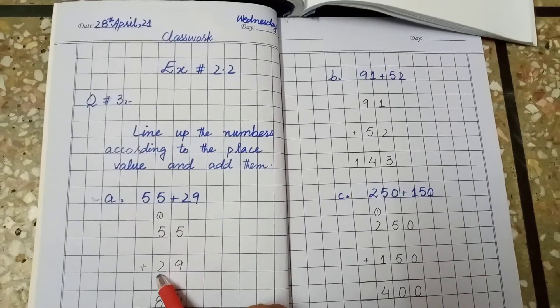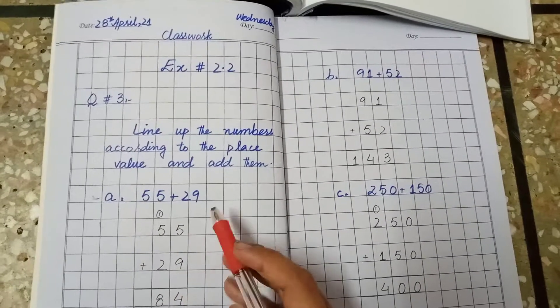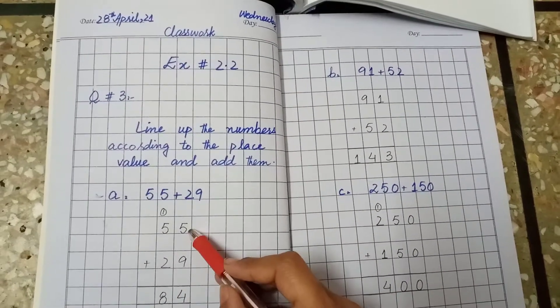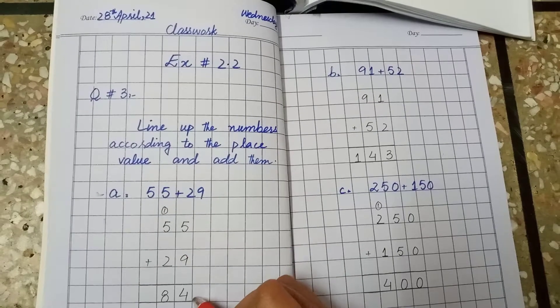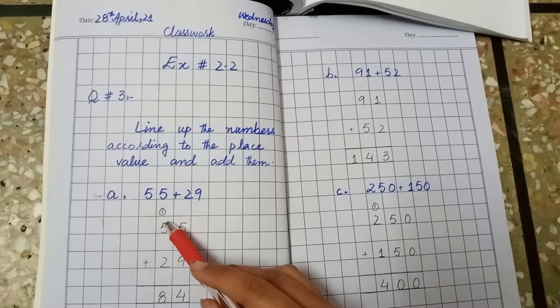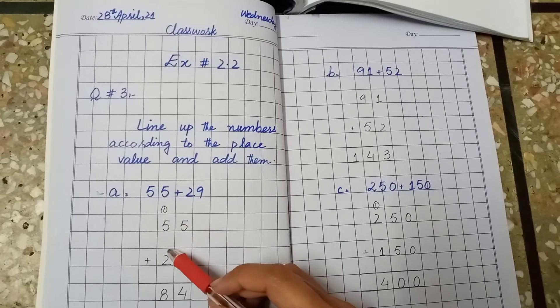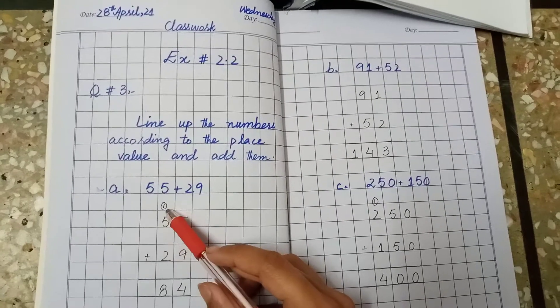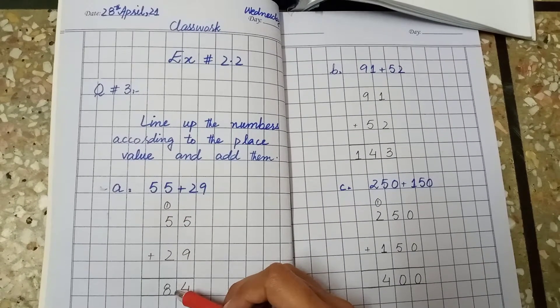55 plus 29. We will start addition from the right side. 9 and 5 makes 14. We will write here 4 and 1 will be carry. 5 and 2 make 7, 7 and 1, 8. So we will write here 8.